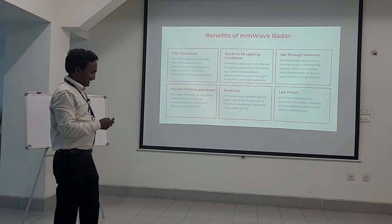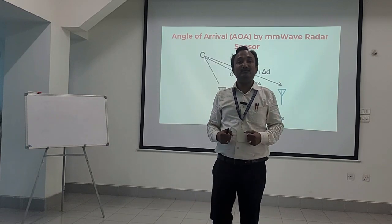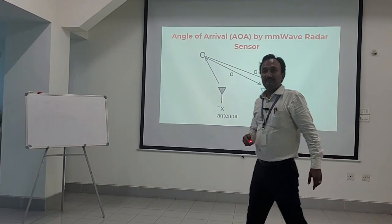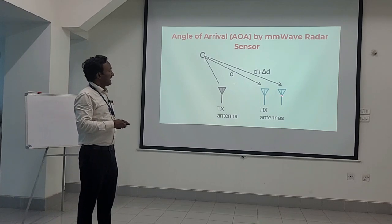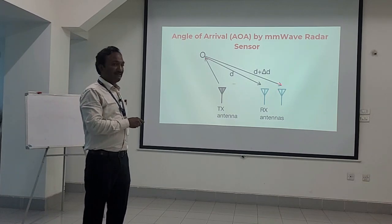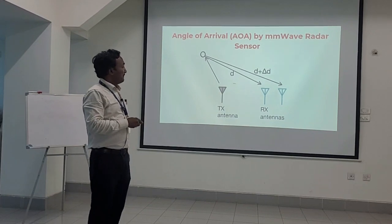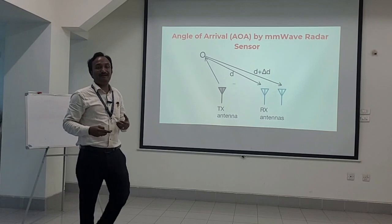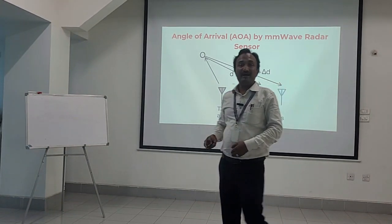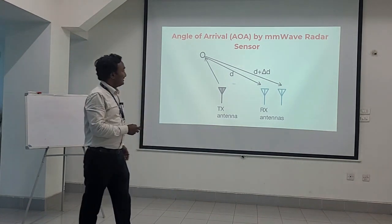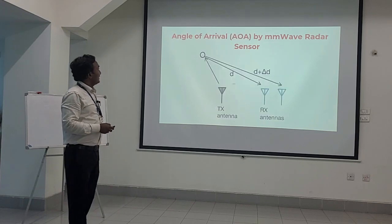The last measurement is the angle of arrival. For measuring this parameter, we need one transmit antenna but two receive antennas. Both receive antennas will get the reflected signal, but with a difference. By knowing this difference and applying some mathematical calculations, we can easily find the angle of arrival. I will not go much deeper into the mathematical calculations involved for measuring the velocity and the angle of arrival.